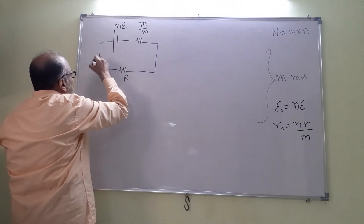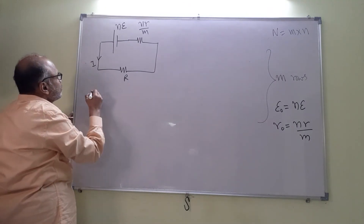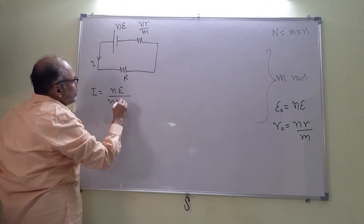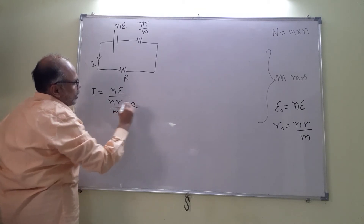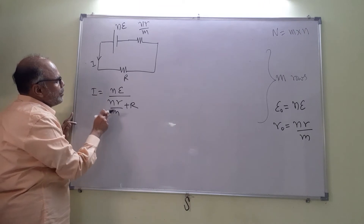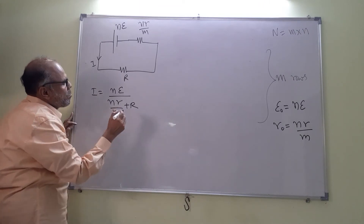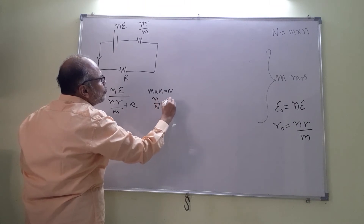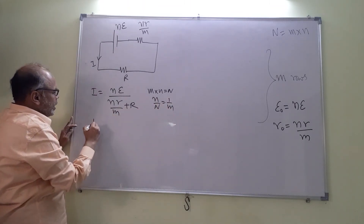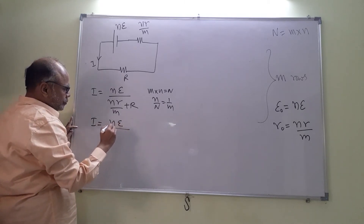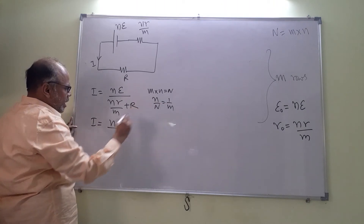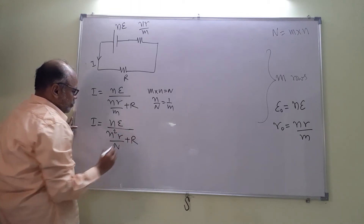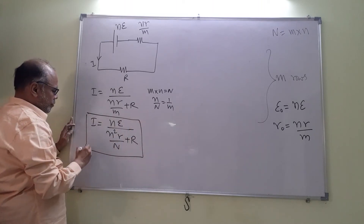The current I equals n·E divided by (n·r/m plus R). Since m·n equals capital N, we can write 1/m as n/N, so n·r/m becomes n²·r/N. Therefore I equals n·E divided by (n²·r/N plus R). This expresses the current as a function of the single variable n.